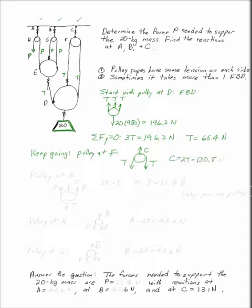Keep going. Next, look at pulley E. I have a tension pulling down and three P's pulling up. 3P equals T, which gives P equals 21.8 Newtons.